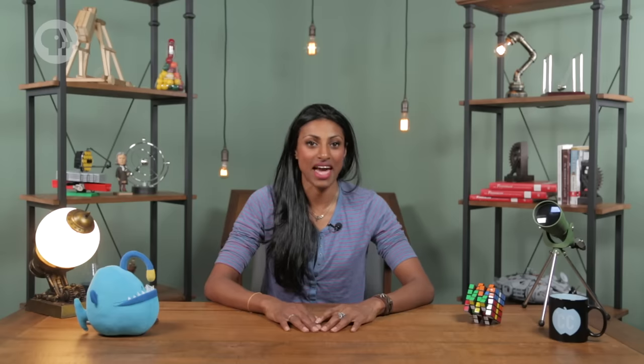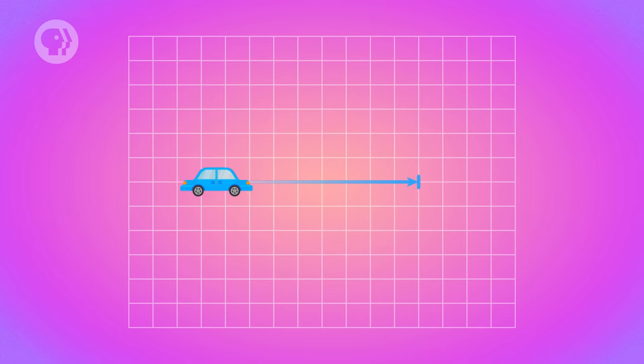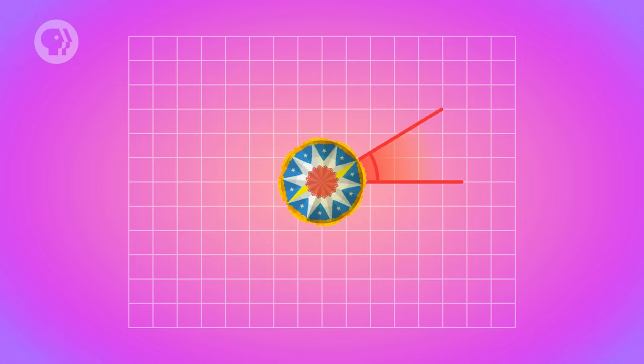So now we know how to describe the angle of something that's rotating. But what about the velocity of its rotation? Well, we've already learned that plain old translational or linear velocity is a measure of an object's change in position. And in the same way, rotational velocity is a measure of an object's change in angle.